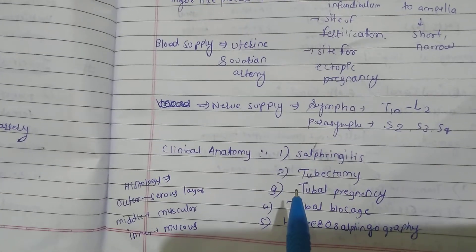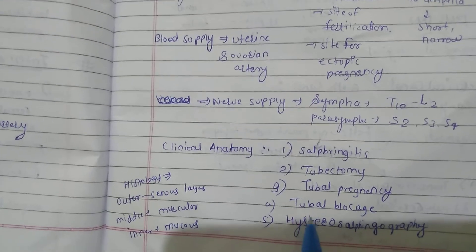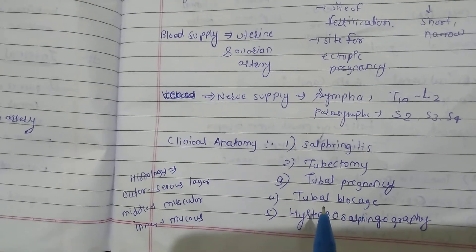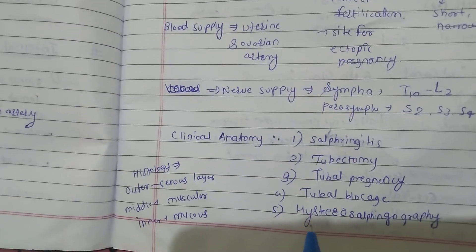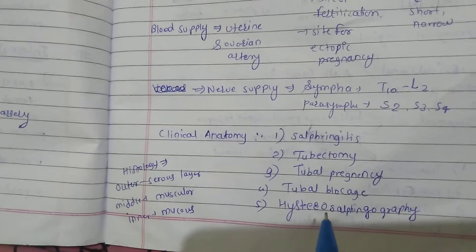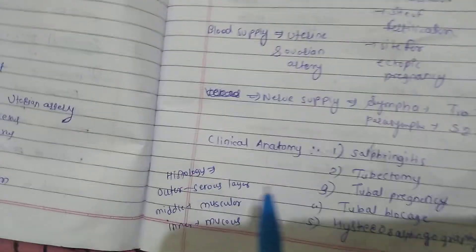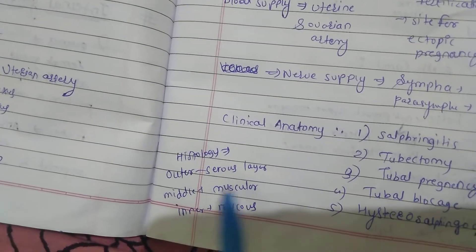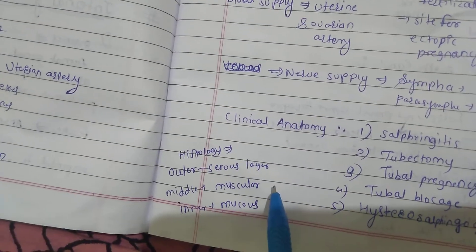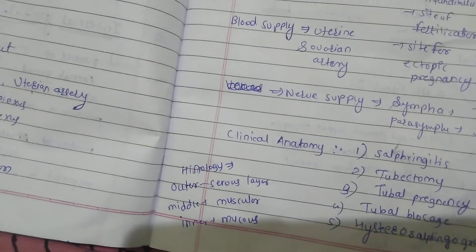Clinical anatomy of the fallopian tube includes salpingitis, tubectomy, tubal pregnancy, tubal blockage, and hysterosalpingography. Histology: outer serous layer, middle muscular layer, and inner mucous layer.